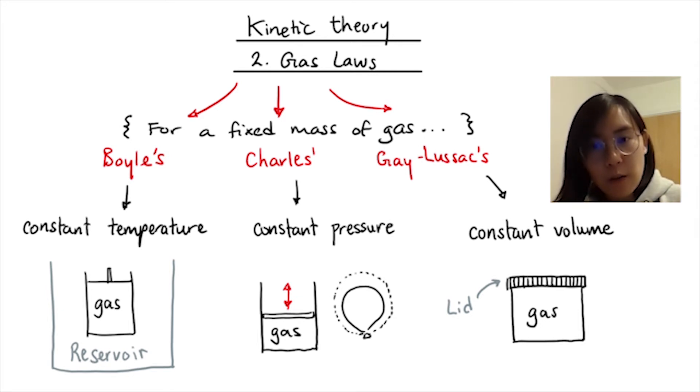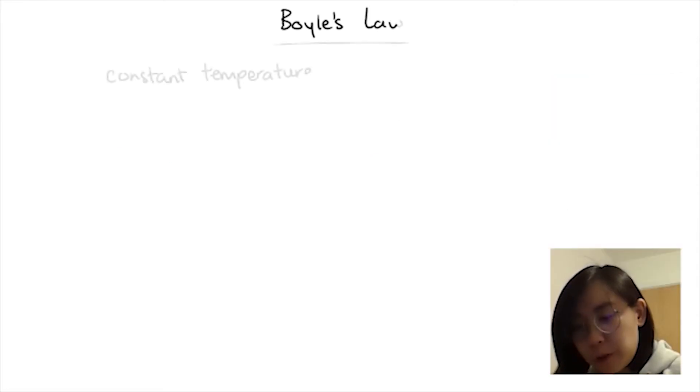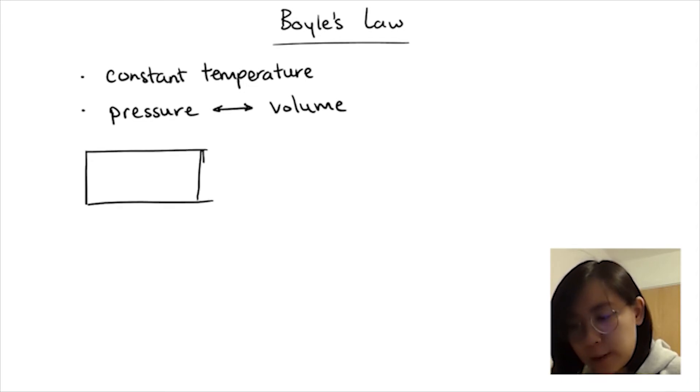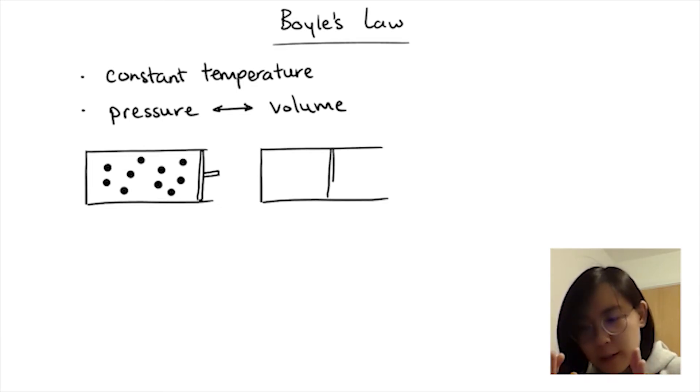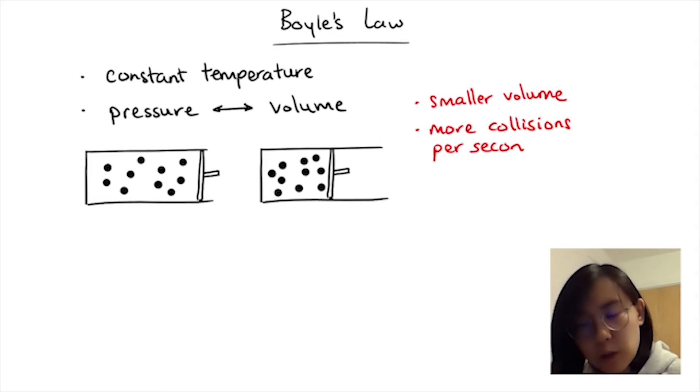Boyle's Law. We can use Boyle's Law to find the relationship between pressure and volume of a gas. Take a column of gas with a fixed mass and fixed temperature. I'm going to depress the piston to half the volume so the particles will collide more frequently with the walls of the container.